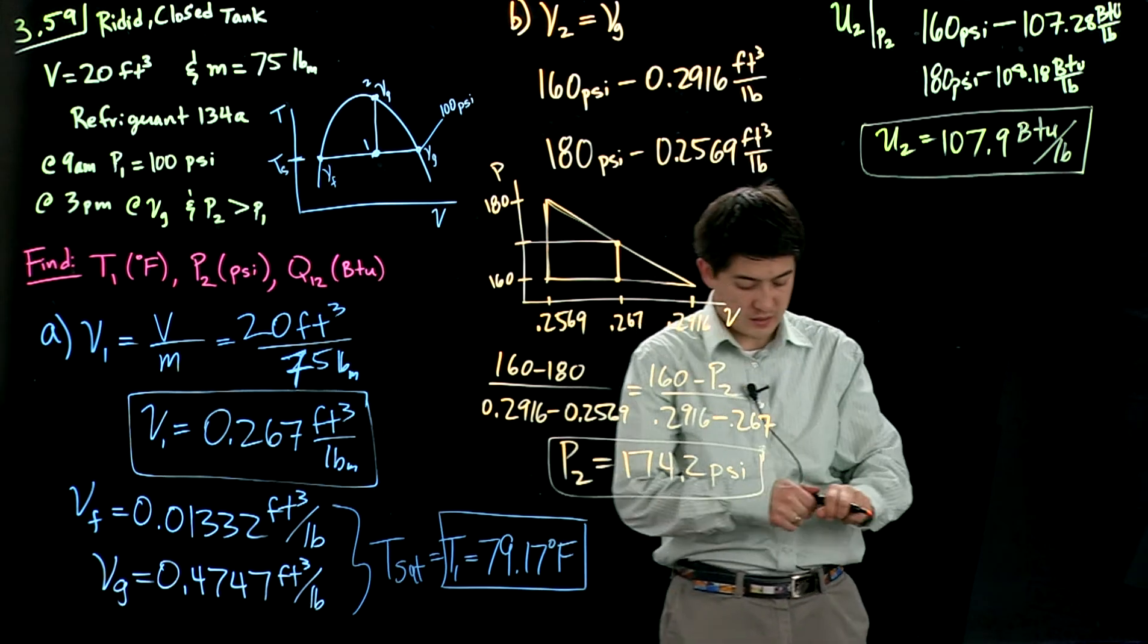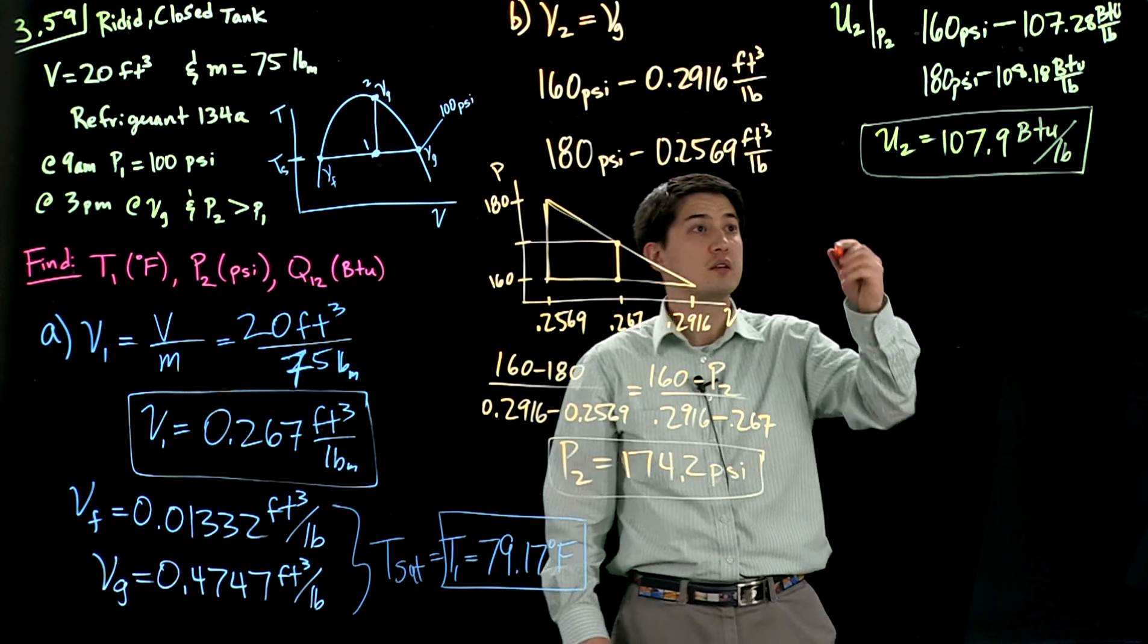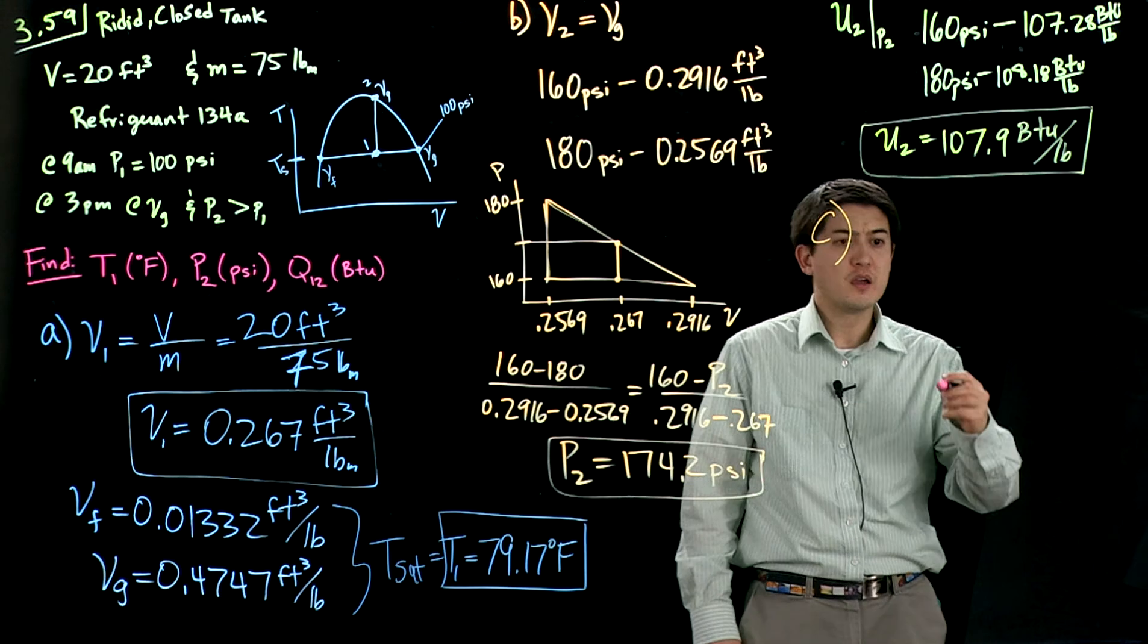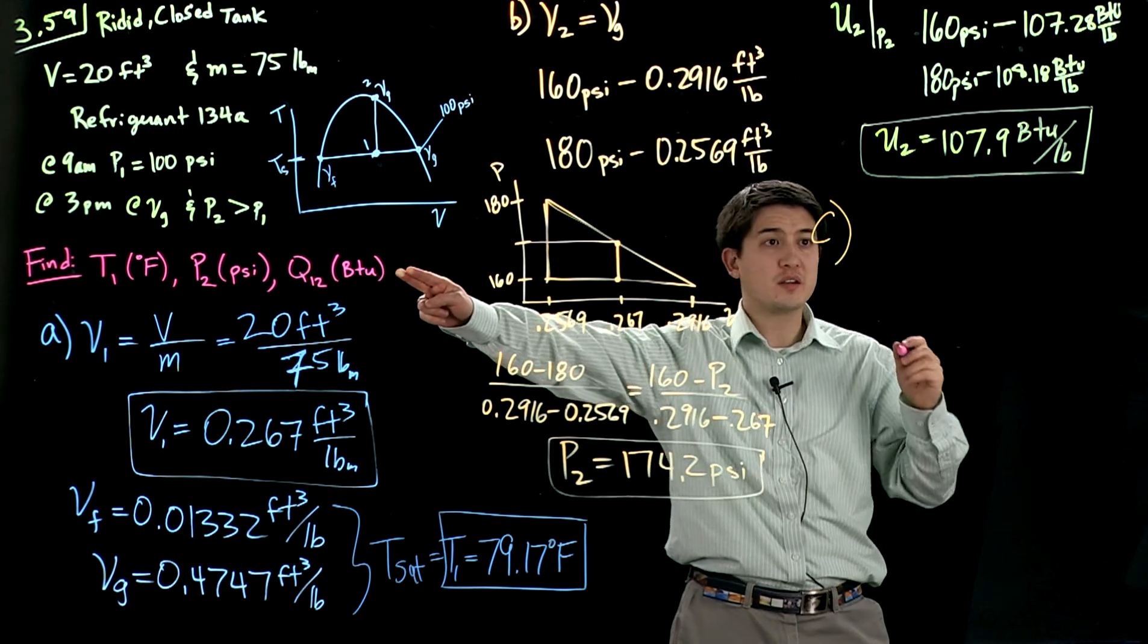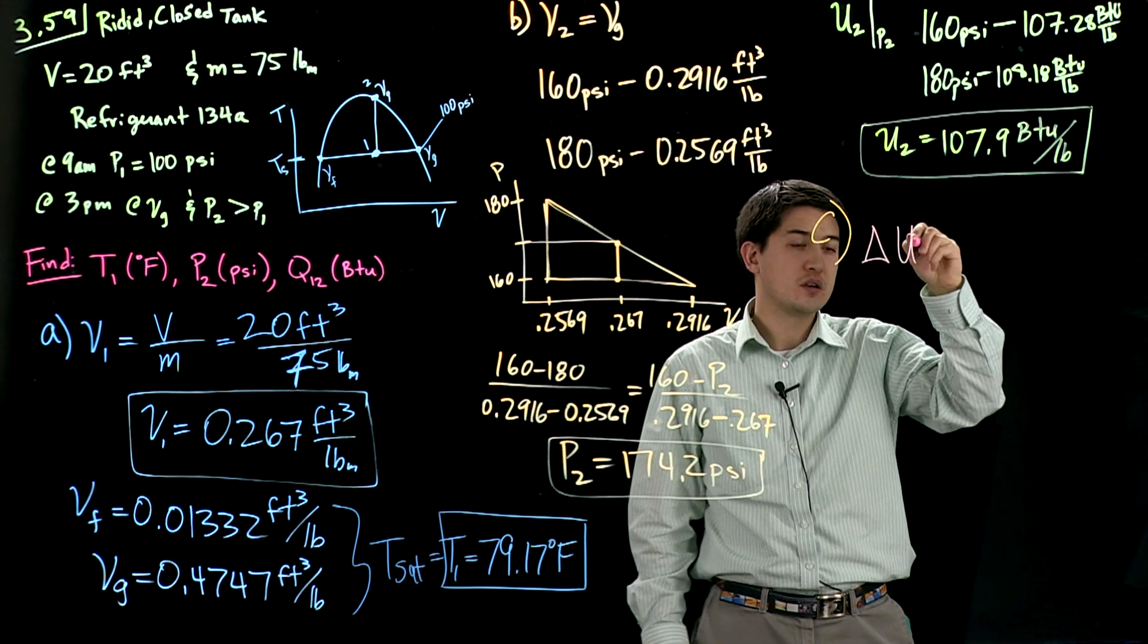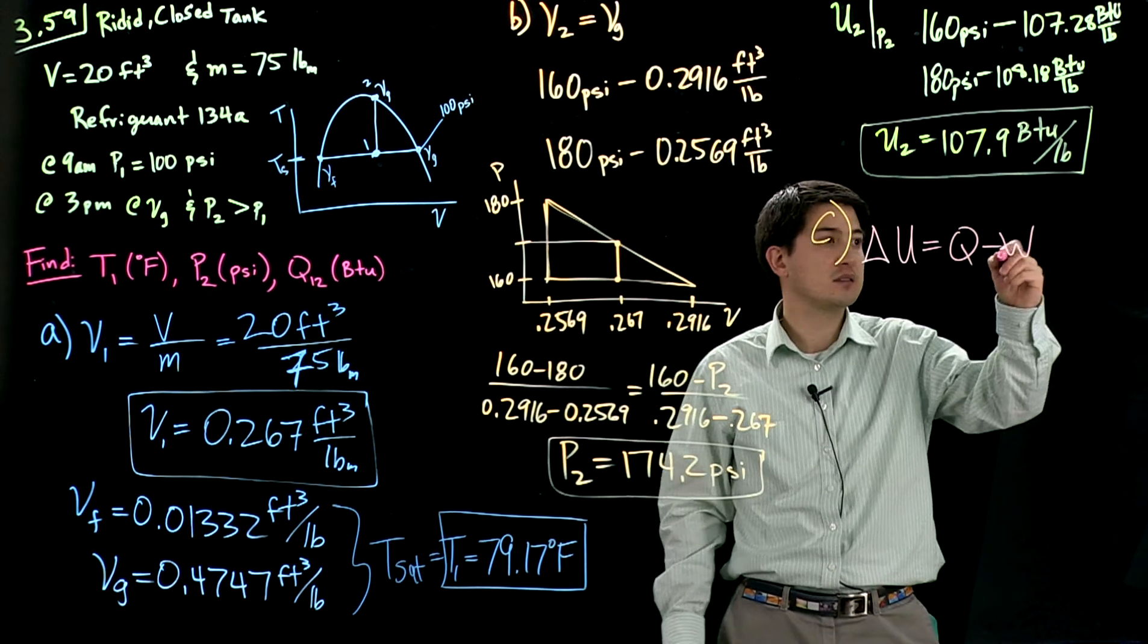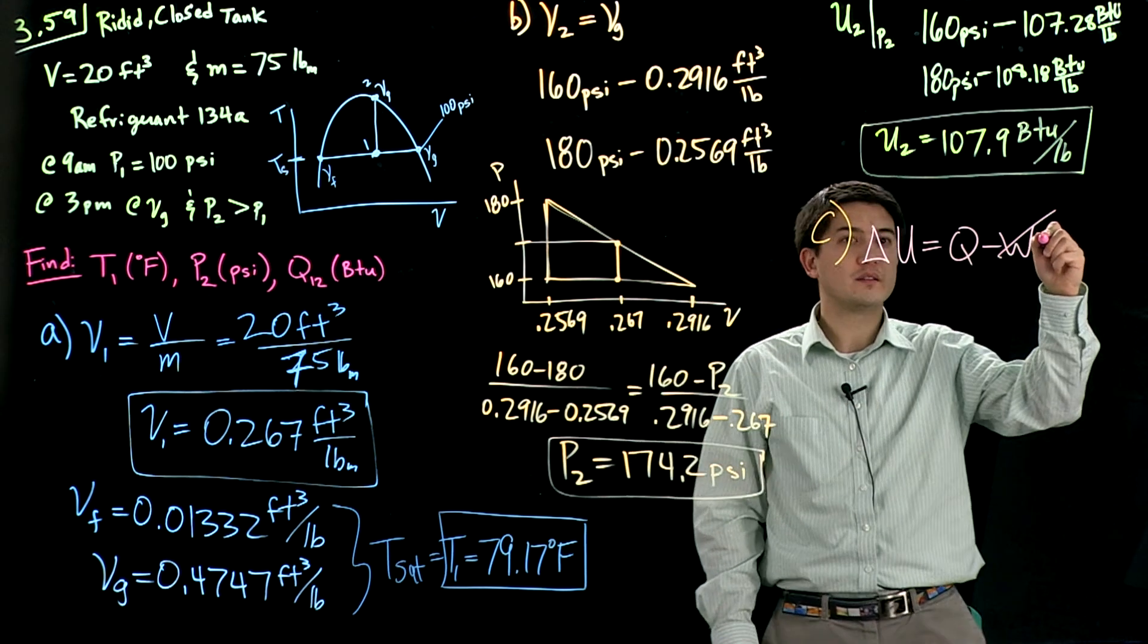Last part. Part C. We want to find the heat transfer from state 1 to state 2. Start with that energy balance. So change in energy equals Q minus W. Well, in this case, there's no change in volume because we're in this closed sealed box. That's out. This is going to be equal to mass times specific energy at state 2 minus specific energy at state 1.